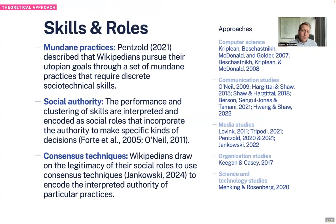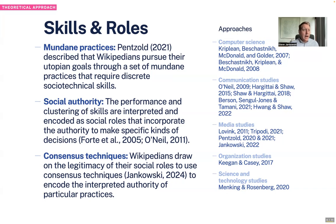For background, very briefly: we draw on some communication theory as well as media studies theory about the way that Wikipedians engage in practices. These practices are based in socio-technical skills, ideas about social authority, and the way that Wikipedia is organized semi-hierarchically in terms of both technical and social roles. Then we ask how those roles and skills play into the production of consensus, and how policies end up representing that consensus — what are the techniques that Wikipedians use?